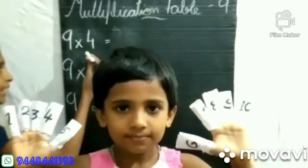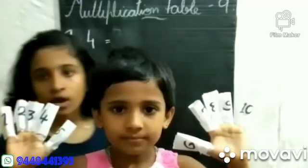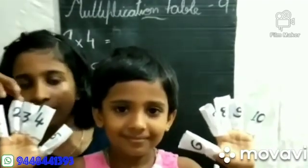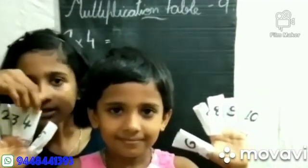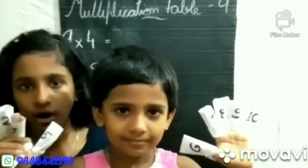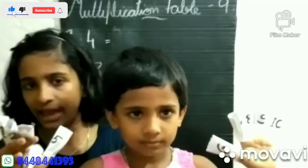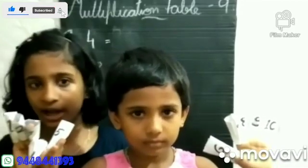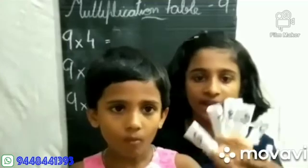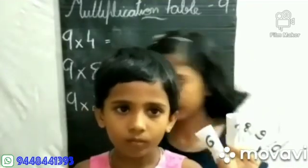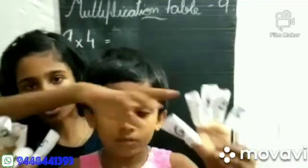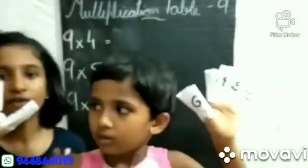Our first example is 9×4. We need to hold the 4th finger: 1st, 2nd, 3rd, 4th. This is the 4th finger, so we need to hold this. There are 3 fingers left on this side and 1 finger left on the other side. And there are 5 fingers left on this hand. We add 1 to 5, so 5 becomes 6. With 3 fingers left on the other side, our answer is 36.